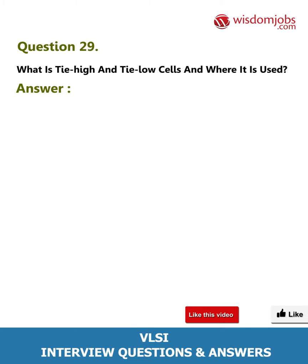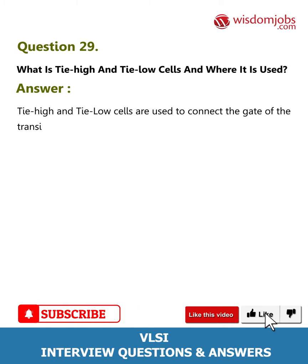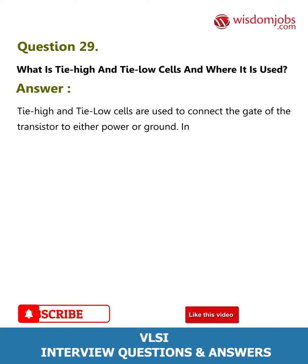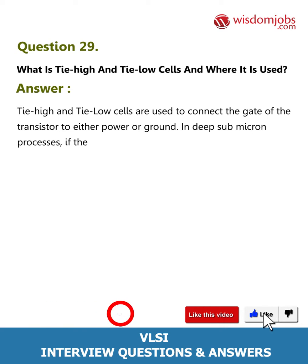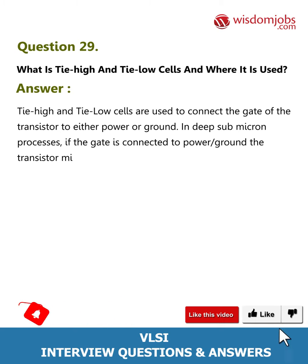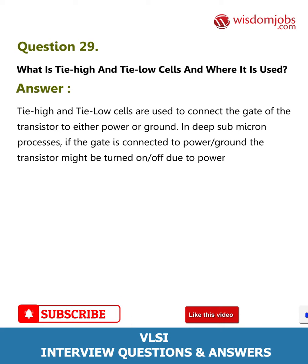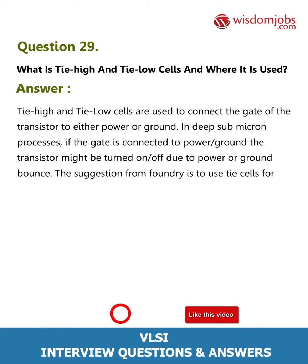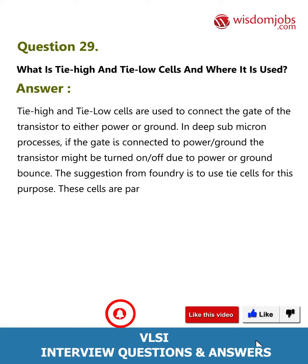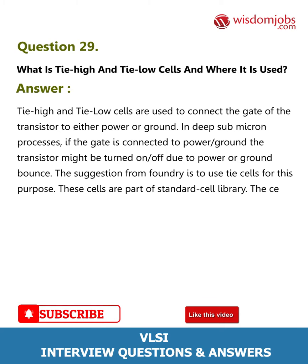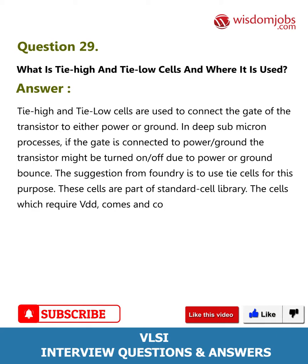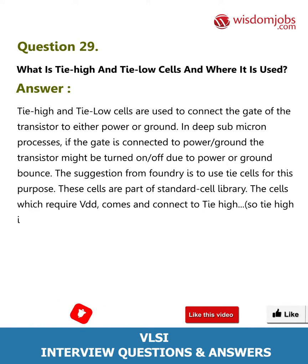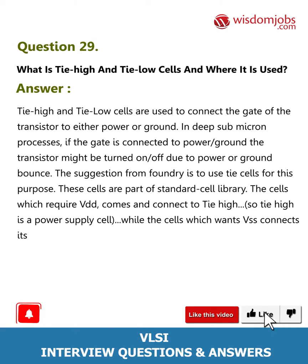Question 29: What is tie high and tie low cells, and where are they used? Tie high and tie low cells are used to connect the gate of the transistor to either power or ground. In deep submicron processes, if the gate is connected directly to power or ground, the transistor might be turned on or off due to power or ground bounce. The suggestion from the foundry is to use tie cells for this purpose. These cells are part of the standard cell library; cells which require VDD connect to tie high, while cells which want VSS connect to tie low.